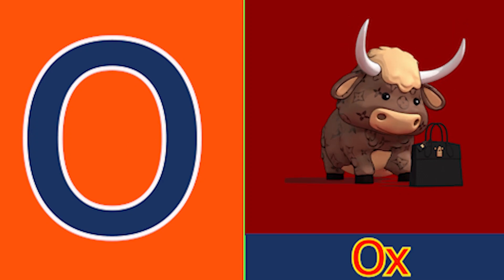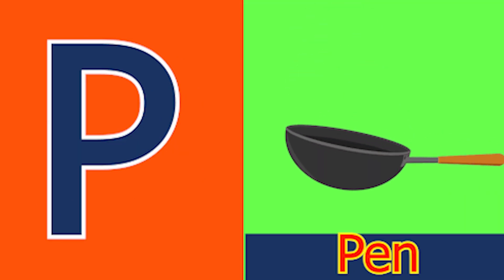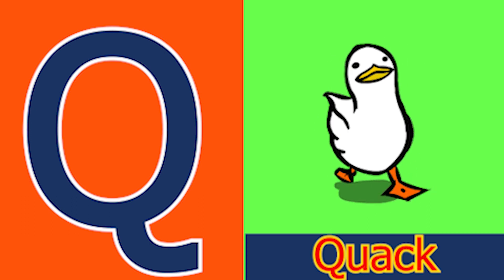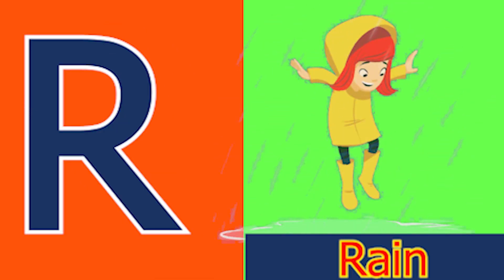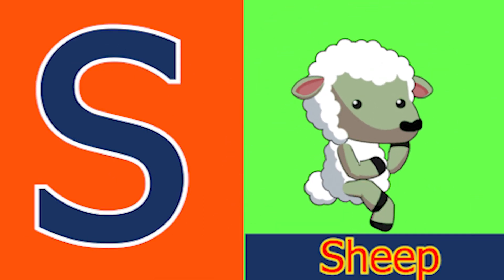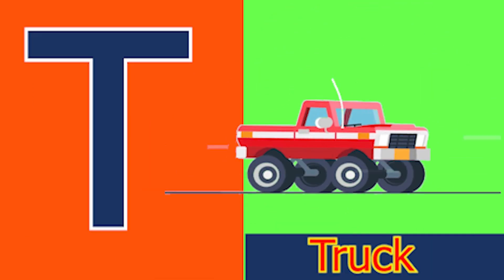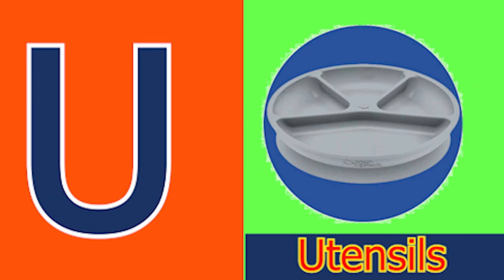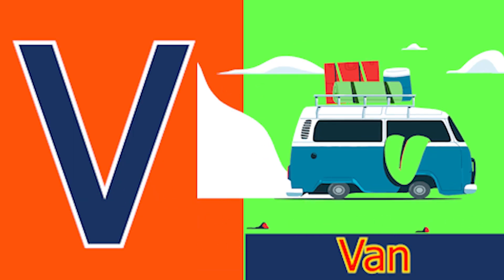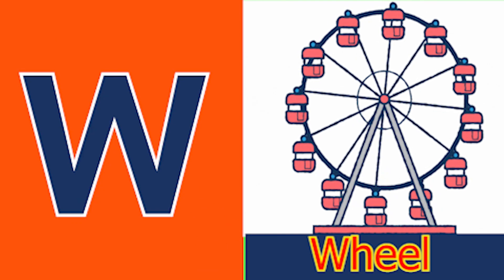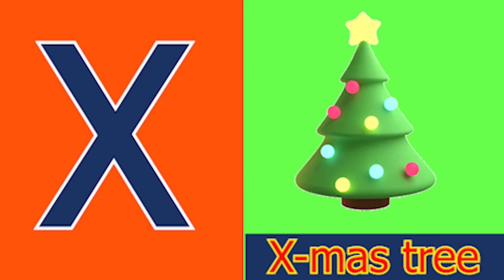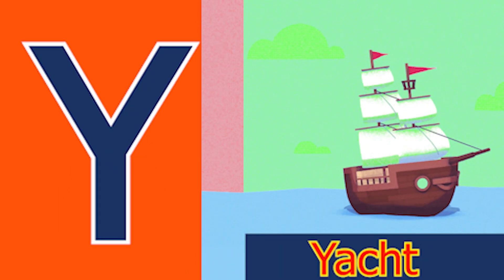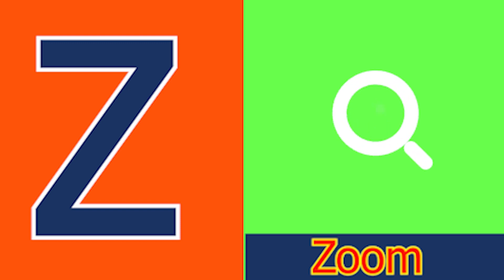N for nose, O for ox and P for pan, Q for quack and R for rain, S for sheep and T for tub, U for utensil, B for van, W for wheel and X for accessory, Y for yacht and Z for zone.